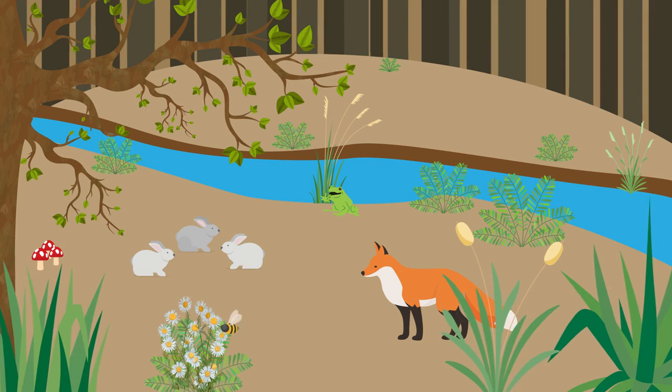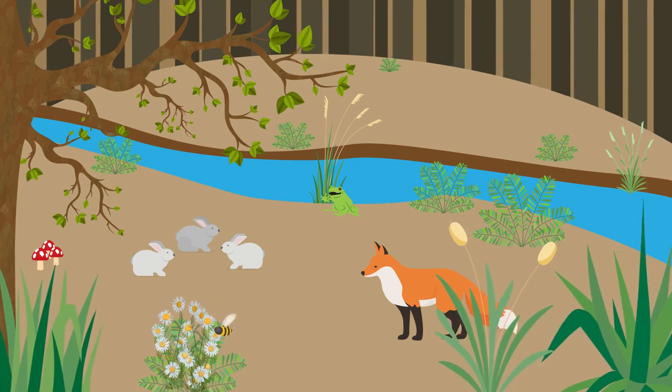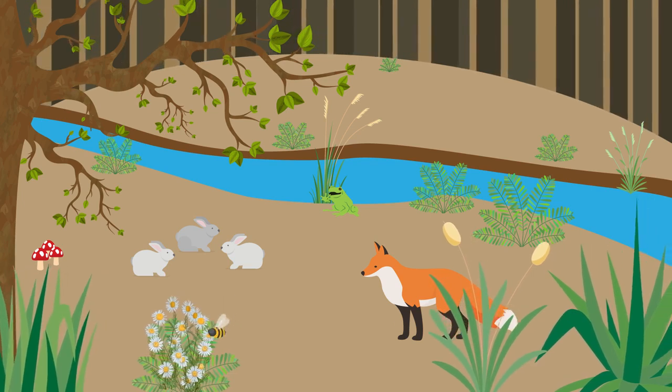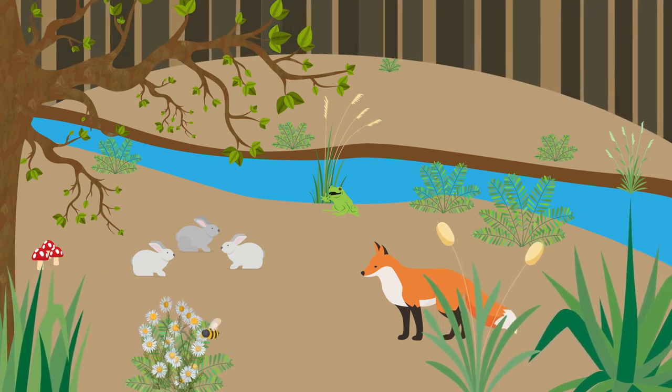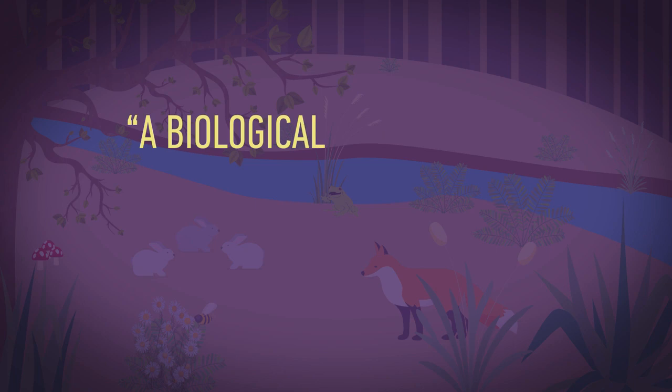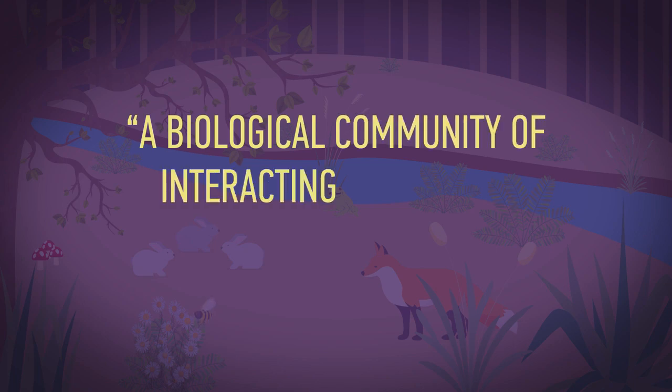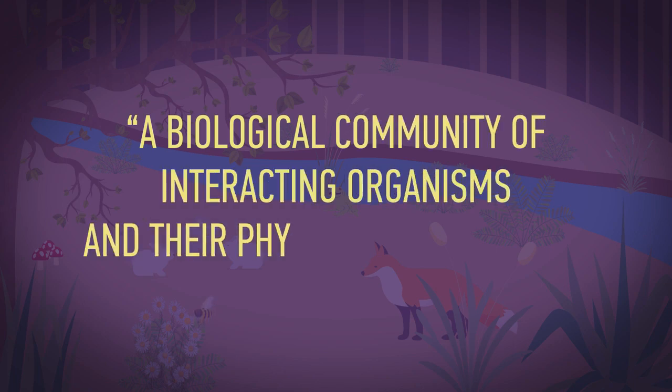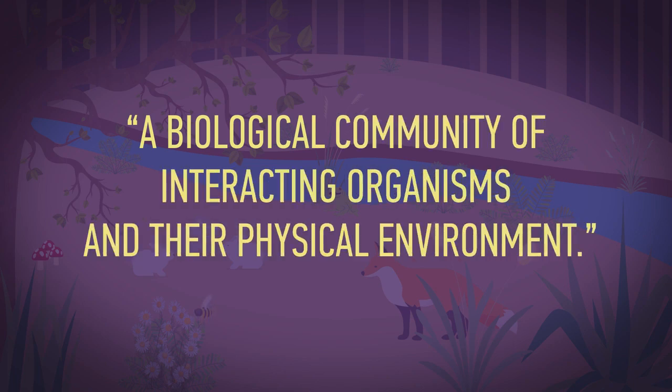shade, the woodland, streams and other things. An ecosystem is defined as a biological community of interacting organisms and their physical environment.